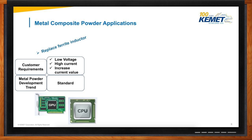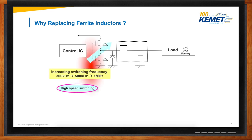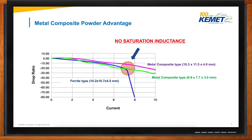The first aim was to go away from ferrite-type material in the inductors. Why? Higher switching frequencies are coming up, so you need low loss at high frequency. At the same time, you want to save power and use lower voltage — so you need peak current at low voltage. The big issue is saturation inductance. If you use a ferrite-type material, after a certain current you will have a very heavy drop-off. Whereas with our metal composite material, that drop-off will not exist anymore — you don't have the saturation inductance problem.